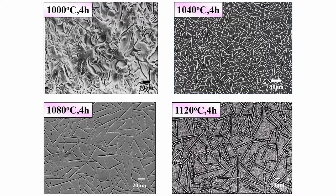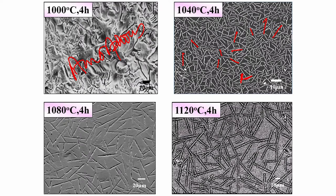Changing heat treatment conditions produces different microstructures. The amorphous glass phase shows no crystalline features. As crystallization proceeds, typical mica crystals form. The interesting feature is that these mica crystals are randomly distributed with no aligned growth — they are interlocked. One mica crystal grows in one direction, another in a different direction, and when they meet, growth is stopped, creating interlocking mica crystals in this particular microstructure.